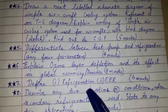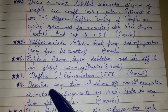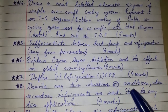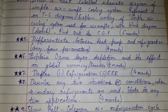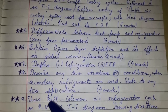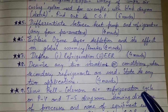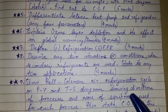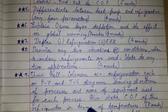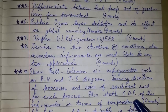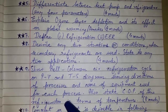Question seven: Define refrigeration and EER, for four marks. Question eight: Define any two situations or conditions when secondary refrigerants are used, and state their applications, for four marks. Question nine: Show the Bell-Coleman air refrigeration cycle on P-V and T-S diagrams, showing directions of processes and names of equipment used for each process. Also state the COP of this cycle in terms of temperatures — for eight marks.